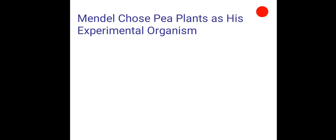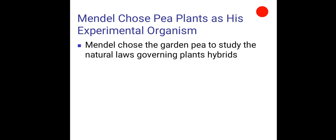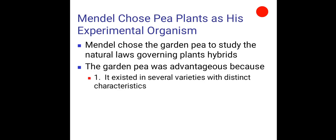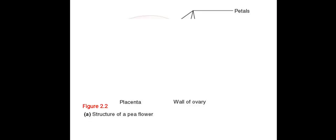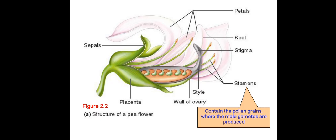Mendel chose pea plants as his experimental organism to study the natural laws governing plant hybrids. The garden pea was advantageous because it existed in several varieties with distinct characteristics. Its structure allowed for easy crosses. Here is the typical structure of a pea flower, showing the placenta, sepals, female organ that is the pistil, and the male organ, stamens, along with the petals. Stamens contain the pollen grains where the male gametes are produced.